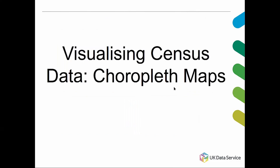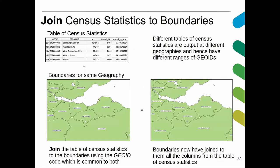The purpose of this first part of the workshop is to visualize census data using choropleth maps. If we have tables of census statistics we can join or link them to census boundaries. At the top left of the slide we have a table of census statistics showing information from the census for local authorities — Edinburgh, Midlothian, and West Lothian. Each of these areas has a unique geographical identifier, a nine-digit code that uniquely identifies that record within the census data.